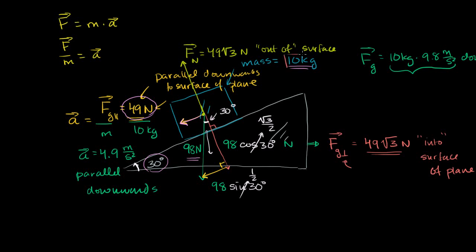In the last video, we had a 10 kilogram mass sitting on top of an inclined plane. The plane had a 30 degree angle. In order to figure out what would happen to this block, we broke down the force of gravity on this block into the components that are parallel to the surface of the plane and perpendicular to the surface of the plane. For the perpendicular component, we got 49 times the square root of 3 newtons downwards — 98 times this quantity over here downwards.